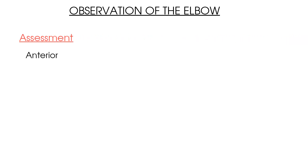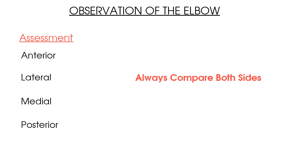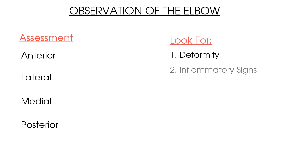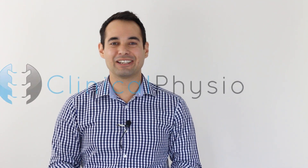So here are the key points to summarise this video on elbow observation. Get used to breaking down your observation into an anterior, lateral, medial and posterior view, ensuring that you compare both affected and unaffected sides. When observing your patient, look for deformity and inflammatory signs which include redness, swelling and bruising. You can also look for signs of specific pathology as highlighted throughout the video. Thank you as always for watching, and we'll see you again on Clinical Physio.